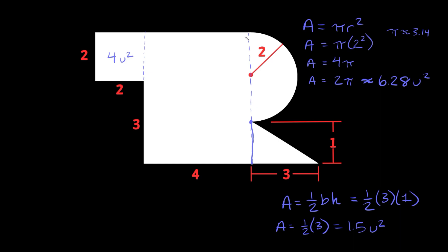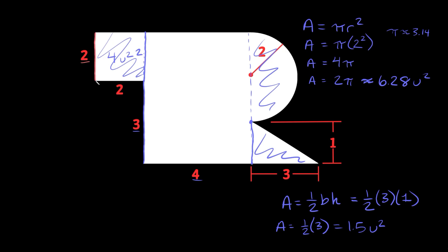Lastly, we have this big rectangle. We already found the areas of the square, semicircle, and triangle, so all we have left is this big rectangle. The width down here is 4. For the height, this distance is 3, and we also know this distance is 2 — since the top square has side 2 — so the total height is 2 plus 3, which equals 5. The area of the rectangle is 5 times 4, which equals 20 units squared.